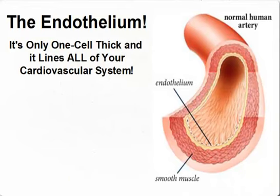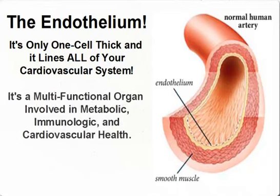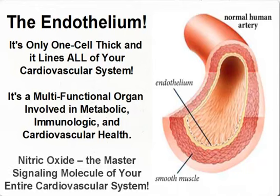Your endothelium is only one cell thick. It lines the inside of your heart, the inside of your arteries, arterioles, venules, and veins. Your capillaries are just extensions of the endothelium. Research over the last 10 years has shown the endothelium to be a multifunctional organ involved in metabolic, immunologic, and cardiovascular functions. One of those functions is to convert the amino acid L-arginine into nitric oxide.